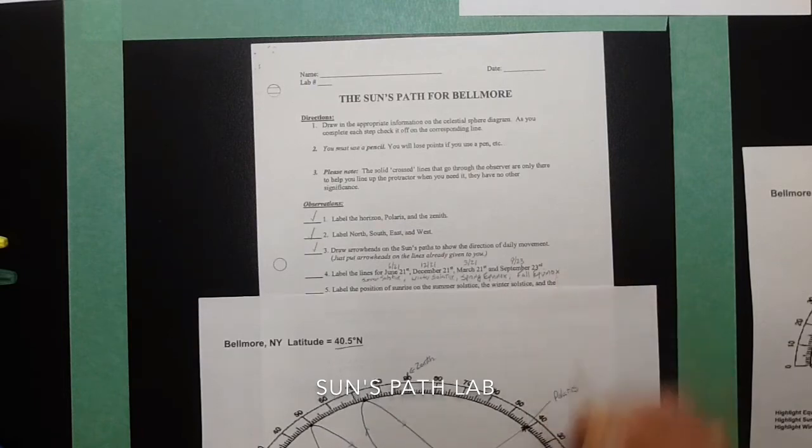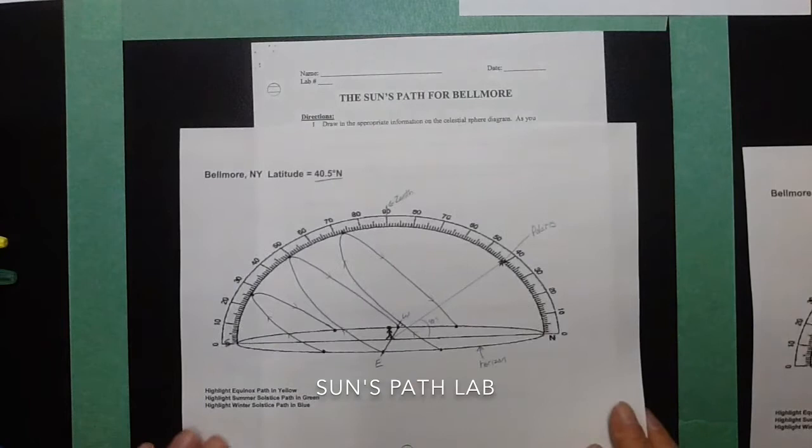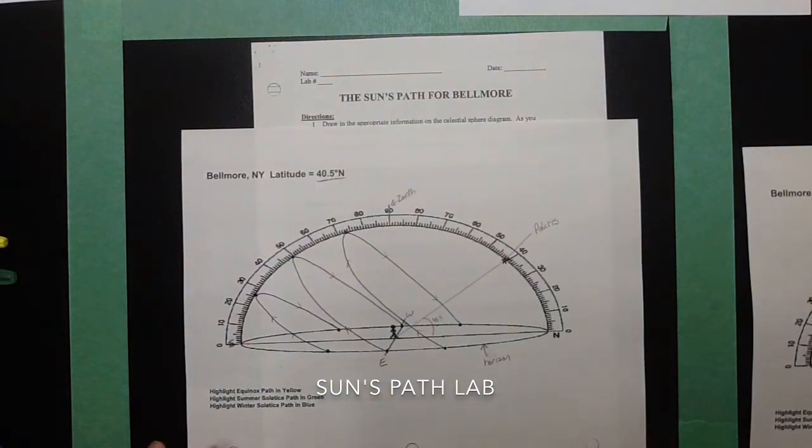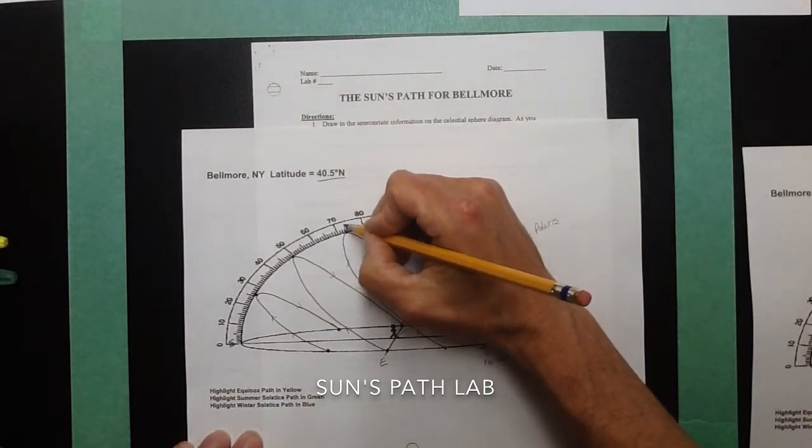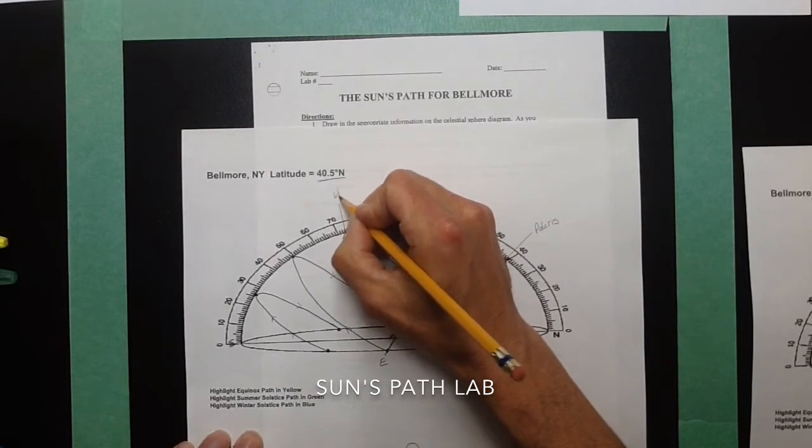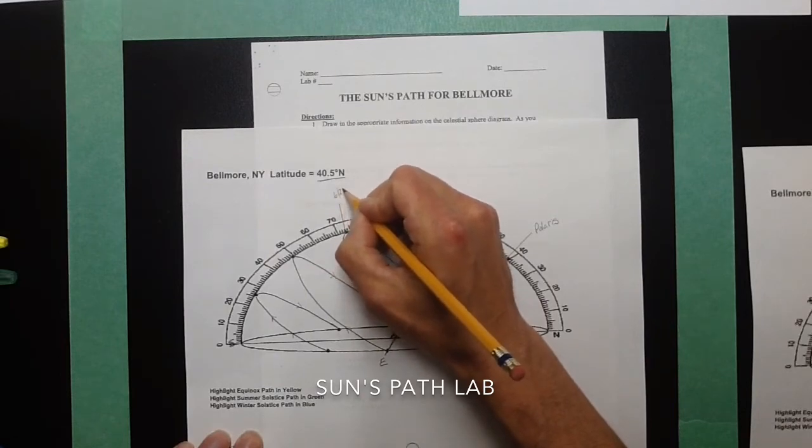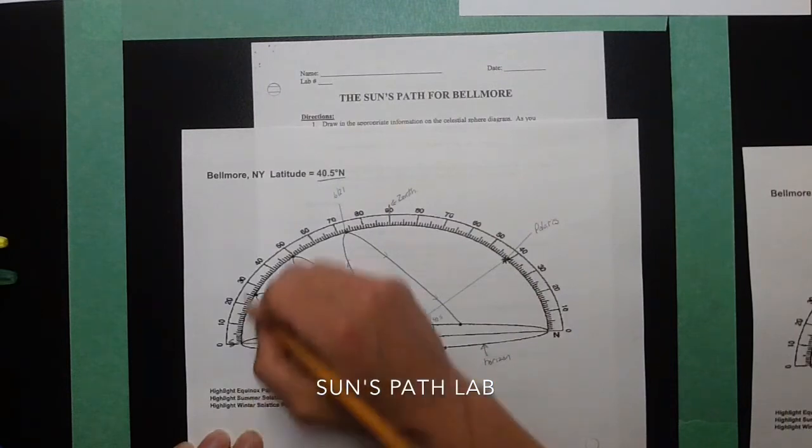Now, summer represents the longest day of the year. And summer is going to have the highest angle. So this path, which goes up here, is going to be the path for 621. So the summer path is the longest highest path.